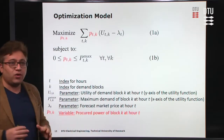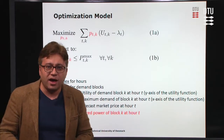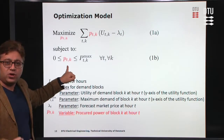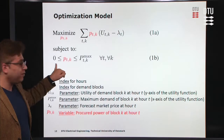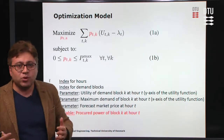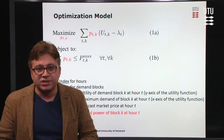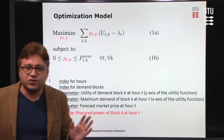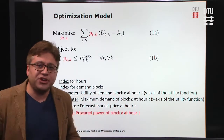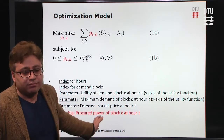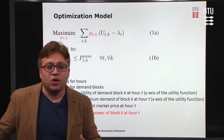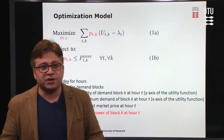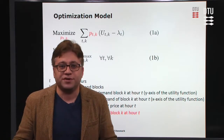The constraint bounds the variable: the procured energy at each time must be non-negative and no greater than the maximum demand of each block at each time — that is, 0 ≤ p_{t,k} ≤ P^max_{t,k}. This is a simple linear problem, and as an exercise you can solve the illustrative example using this optimization problem, either manually or in software such as Python or GAMS.